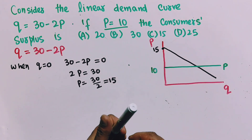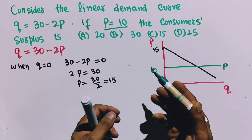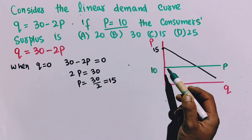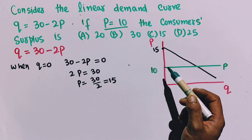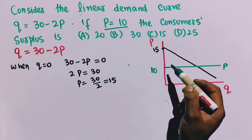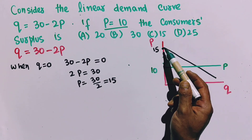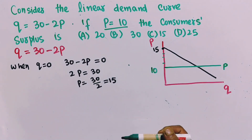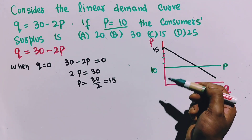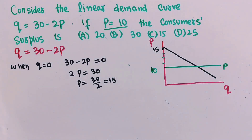Consumer surplus is the difference between the price consumers are willing to pay and the price they actually pay. The price they actually pay is $10, but some consumers are willing to pay $11, $12, $13, and at most $15. So the difference between the price consumers are willing to pay and the actual price they pay defines consumer surplus.